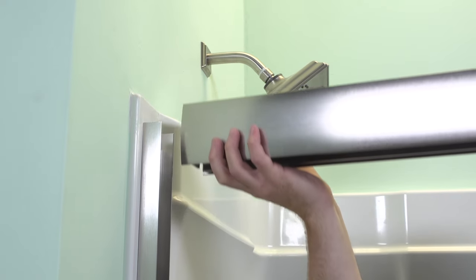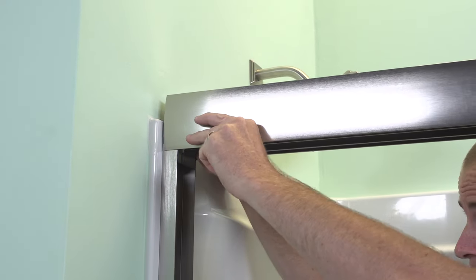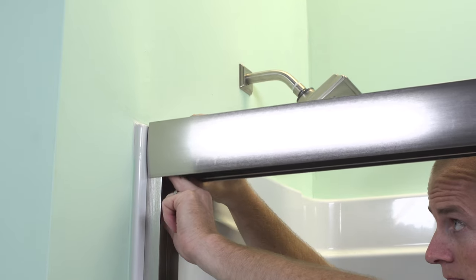For models without the soft close damping system, cut the header as before and attach it to the wall jams with the provided screws.